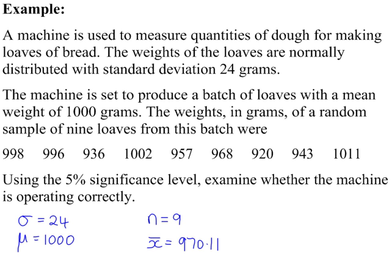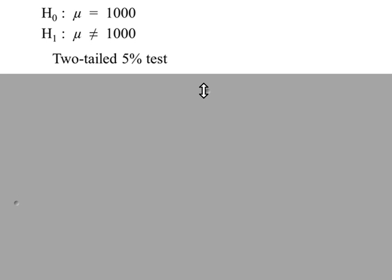So we're testing to see whether the machine produces loaves with a weight of 1000 grams. This will be a two-tailed test. H0: the mean is equal to 1000. H1: the mean is not equal to 1000. Two-tailed test at the 5% significance level.